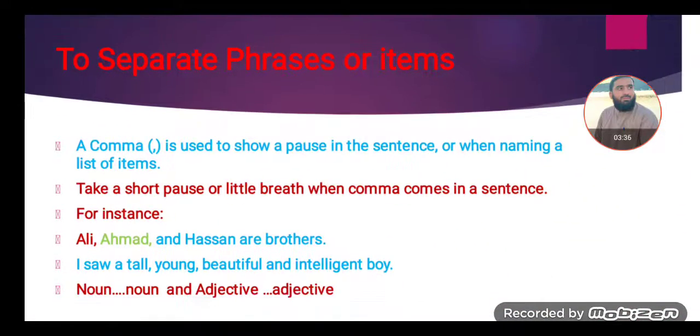To separate phrases or items, to make distinctions among phrases or items, a comma is used. A comma is used to show a pause in the sentence, a short period in a sentence, or when we are naming a list of items in a sentence. Comma is also a very common punctuation mark. Take a short pause, dear students, take a short pause or a little breath when comma comes in a sentence.